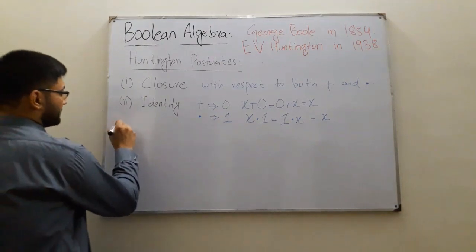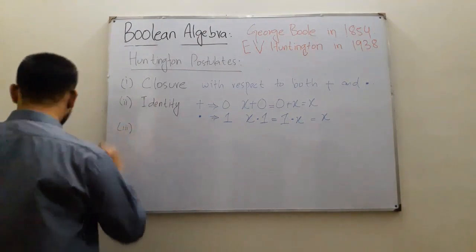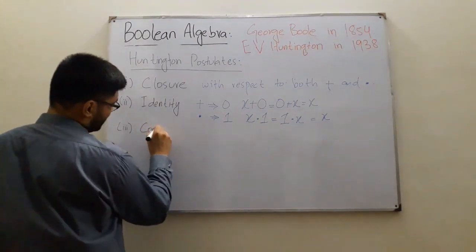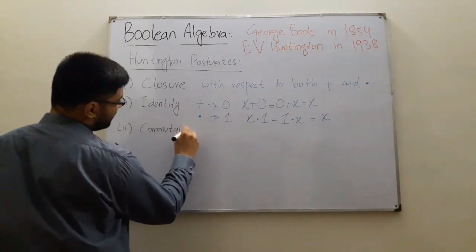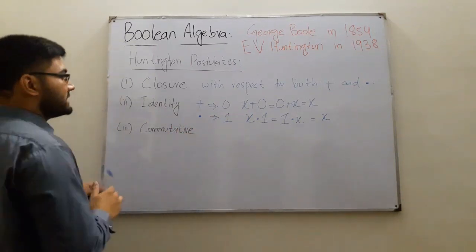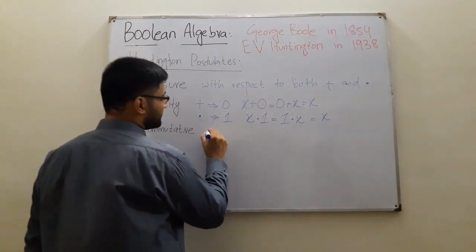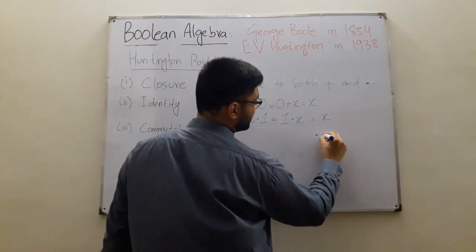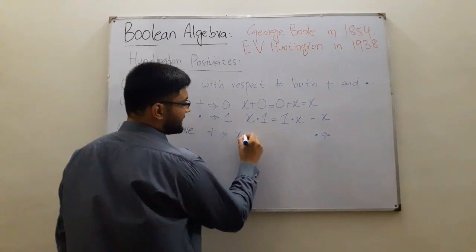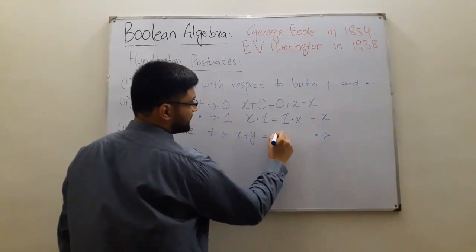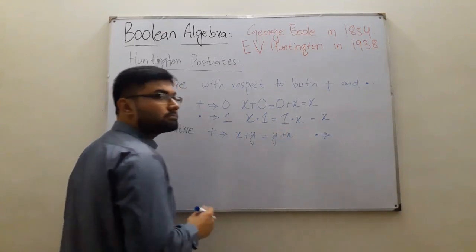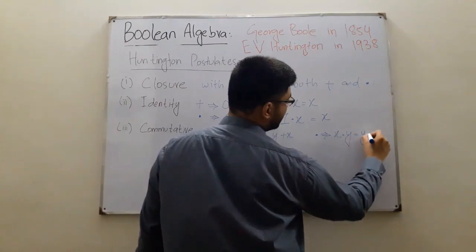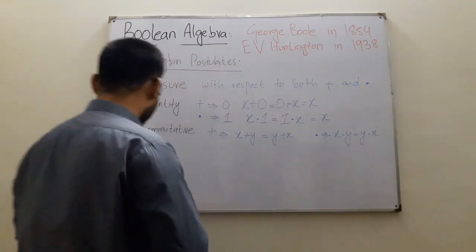The third postulate is Commutative: all rules of Boolean algebra follow the commutative law with respect to both operations. With respect to OR: x + y = y + x. With respect to AND: x · y = y · x.